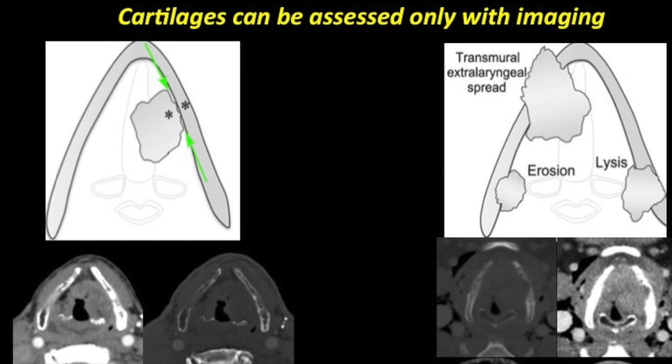The true presence of erosion, lysis, and transmural spread are the indicators of cartilage involvement, and if seen on the outer side, these patients are candidates for surgical management. In the first figure, we can see abutment of the cartilage with mild sclerosis — a sign that is very sensitive but less specific and can be reactive. In the other figures, we can see mild erosion to extensive invasion of the cartilage — these are the candidates for surgical management.